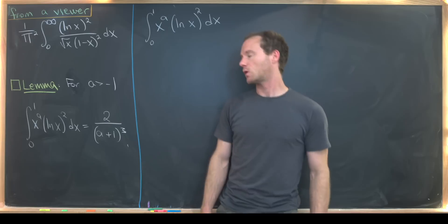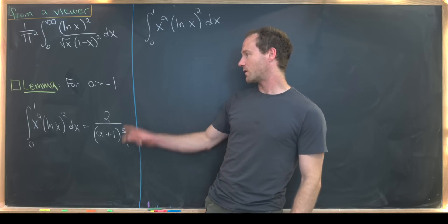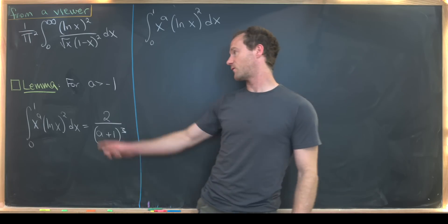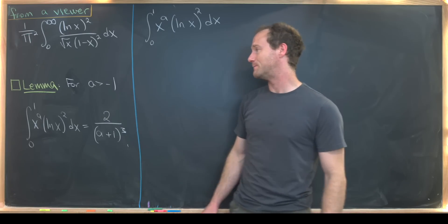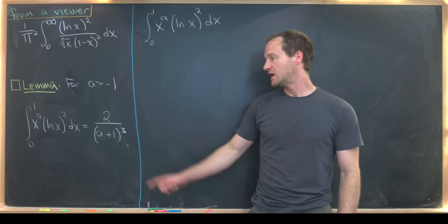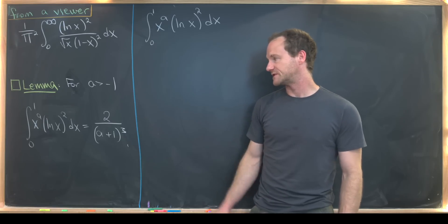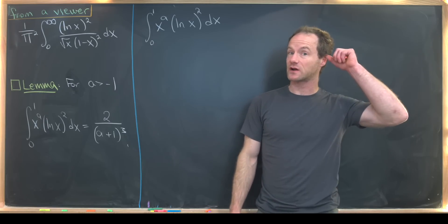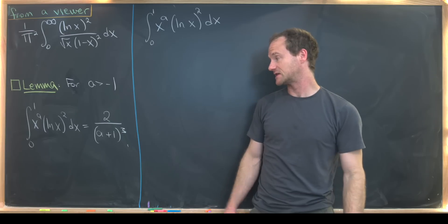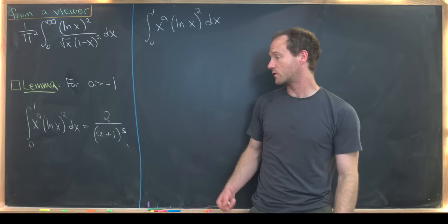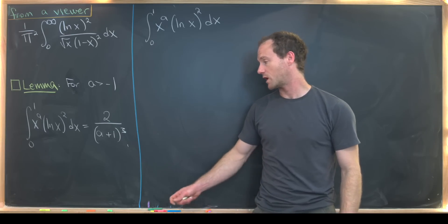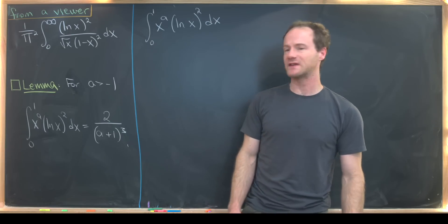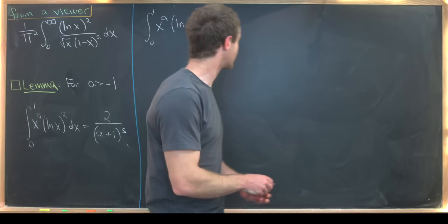Along the way we're going to need the following lemma: for a greater than negative 1, the integral from 0 to 1 of x to the a times the natural log of x squared dx equals 2 over (a+1) cubed.